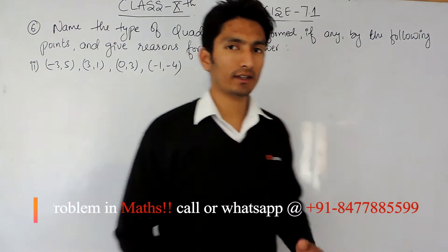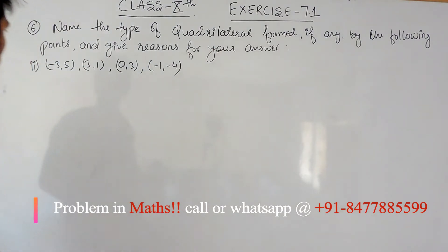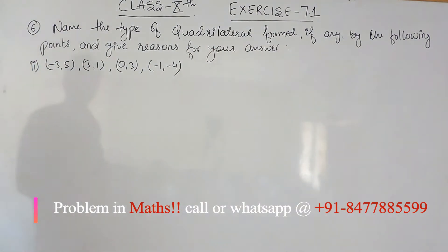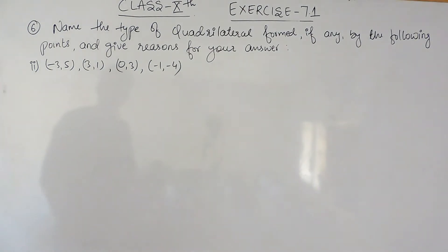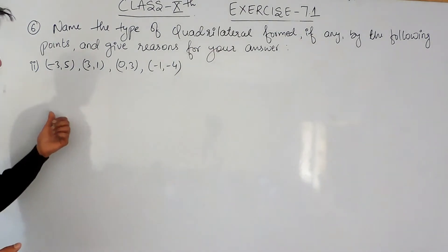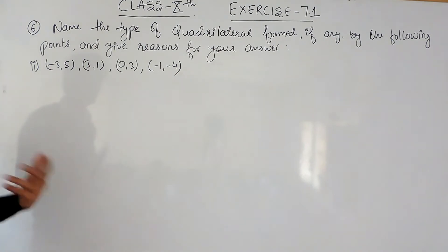Hello everyone. In this video we are going to solve the second part of question number six. We have to name the type of quadrilateral formed, if any, by the following points and give reasons for our answer. I have already discussed in the first part how you can learn the properties of the quadrilateral types that are important according to this chapter.